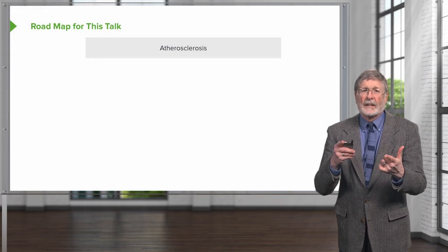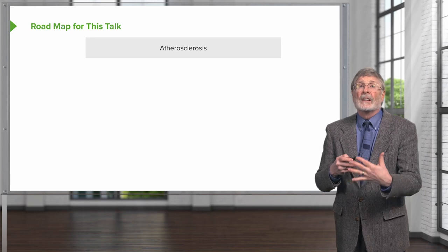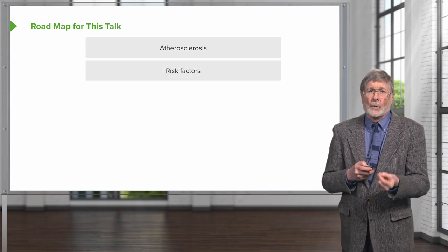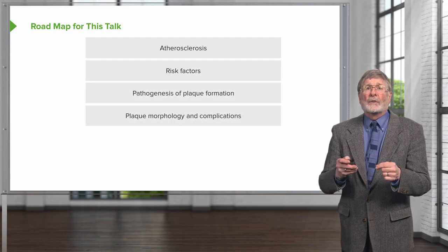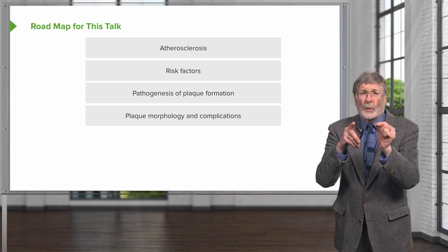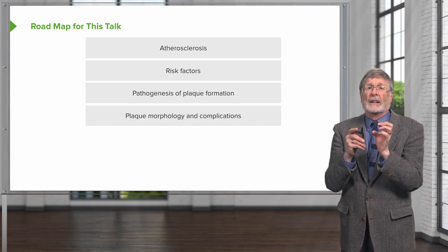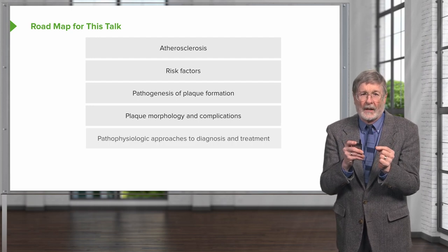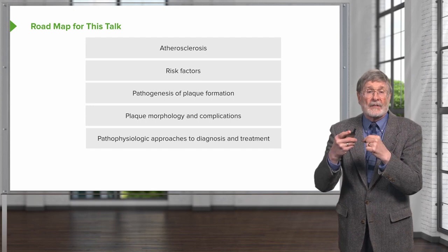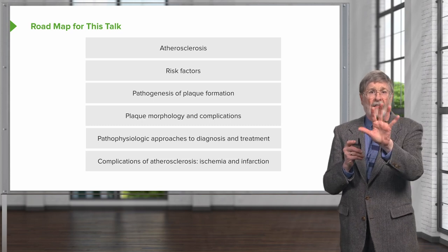Here's the roadmap. We're going to have a number of blocks as we work our way through the various aspects of atherosclerosis. We'll talk about risk factors, how a plaque actually gets formed, how the plaque looks, and the complications related to that morphology. It's not just simply a plaque, but how it is assembled will have implications for outcomes. We'll talk about how we can diagnose and potentially treat atherosclerotic disease, and finally, we'll talk about complications.